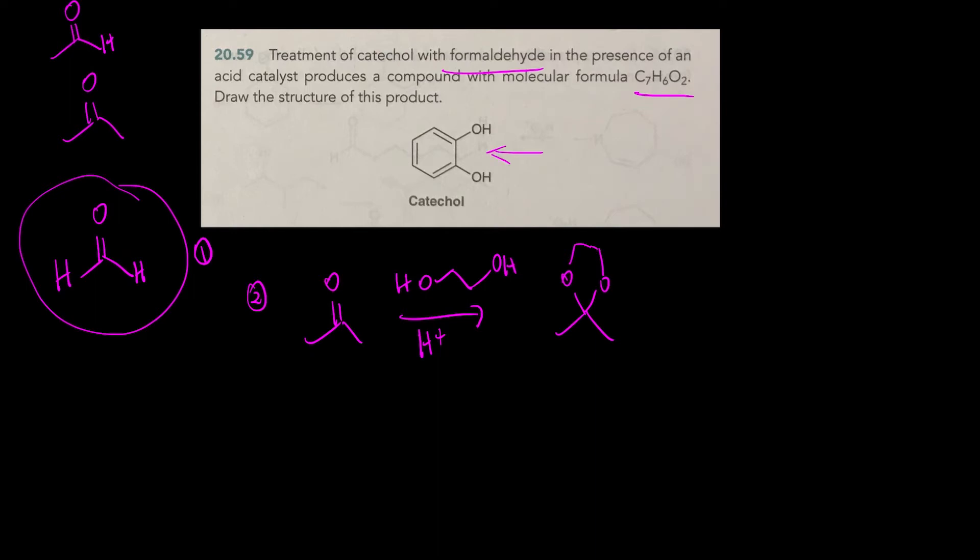So this right here is a diol. And so what we're going to do is we're going to take this thing called catechol. And this is a diol. And then what we're going to do is we're going to take formaldehyde, and we're going to make the cyclic acetal.